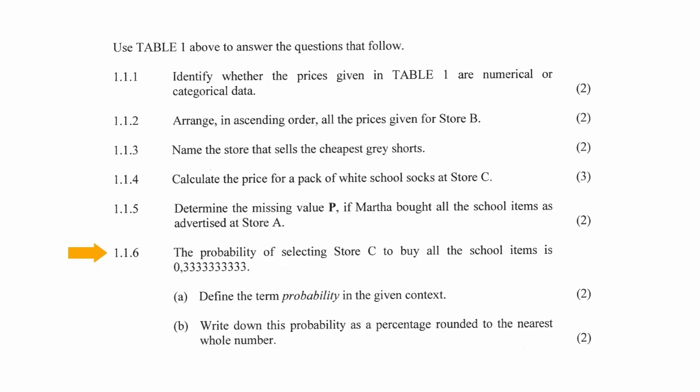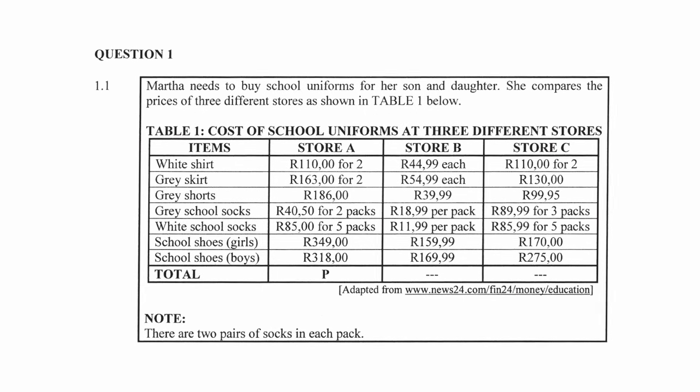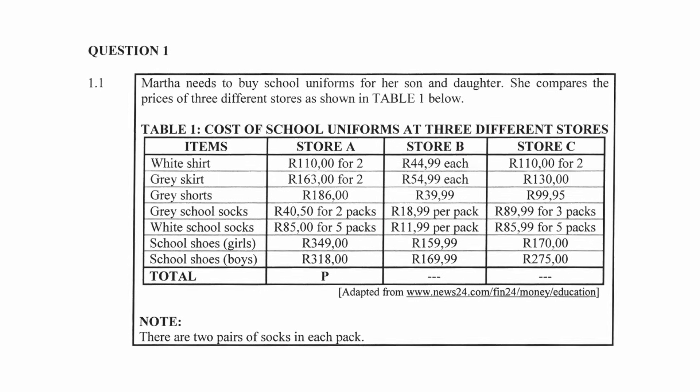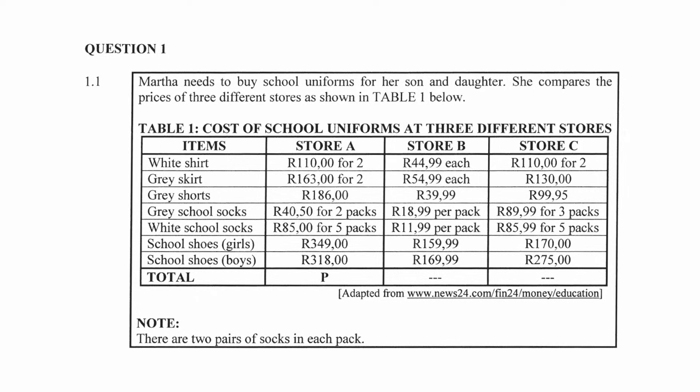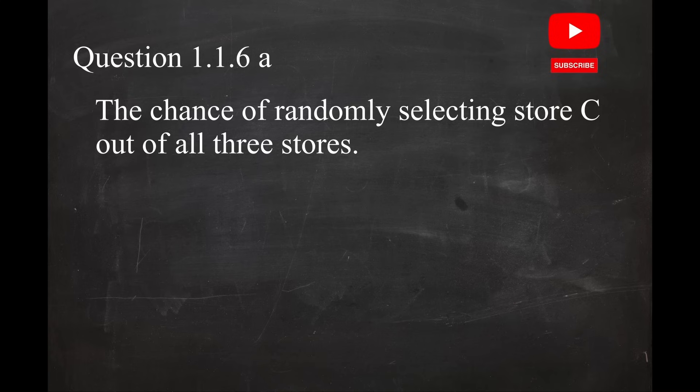In question 1.1.6, it is stated that the probability of selecting Store C to buy all the school items is 0.3 recurring. In question 1.1.6a, you are asked to define the term probability in the given context. The context part is important — just giving the general definition of the term probability won't get you the marks. You have to give the definition with reference to the given context. The term probability can be defined as the chance of randomly selecting Store C out of all three stores.